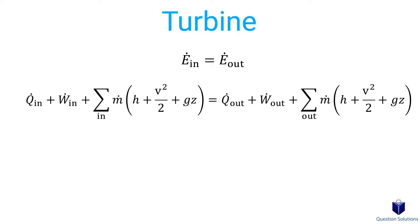Now with a turbine, we have work output, but heat transfer is usually negligible. Potential energy is also negligible. However, the fluid velocities in turbines tend to be high, and these fluids can experience large changes in kinetic energy.